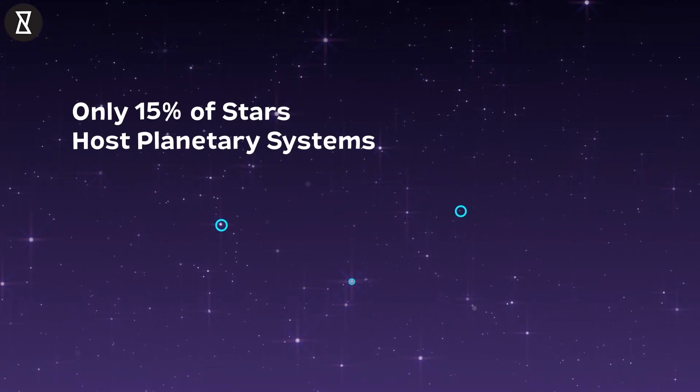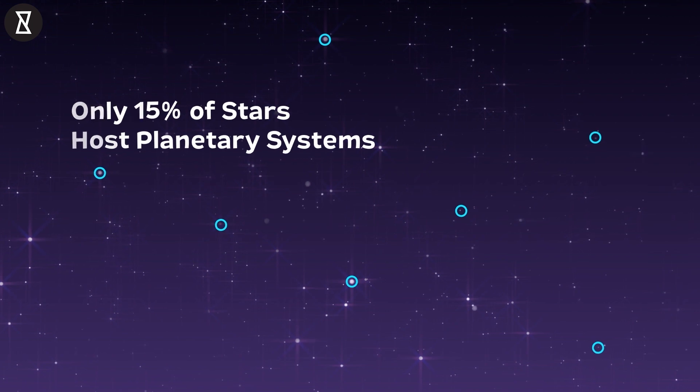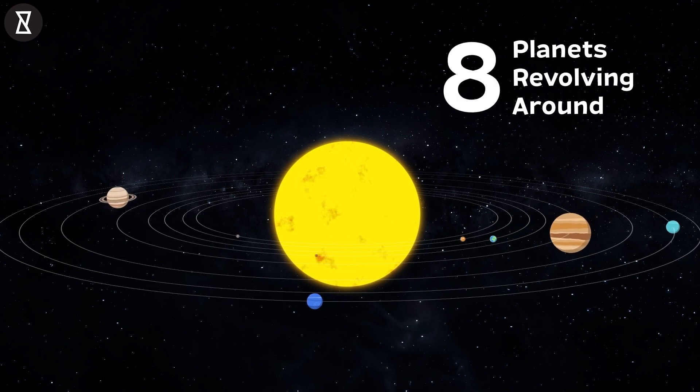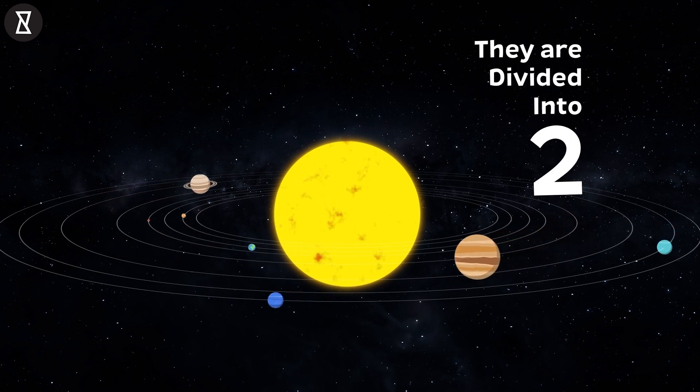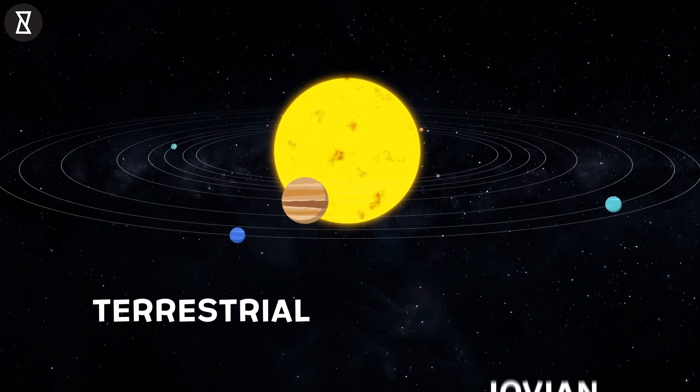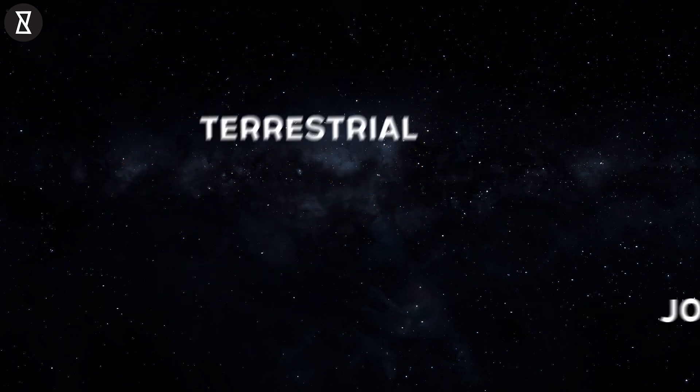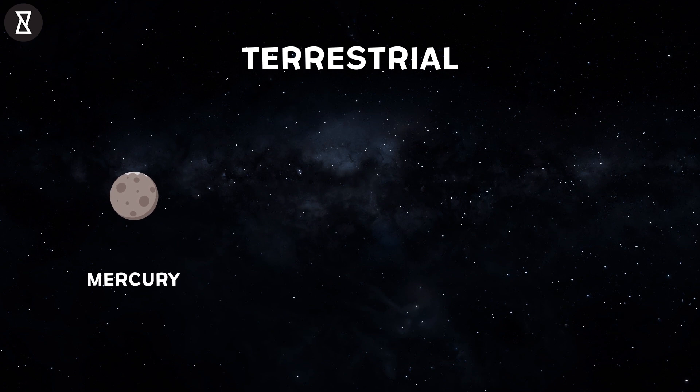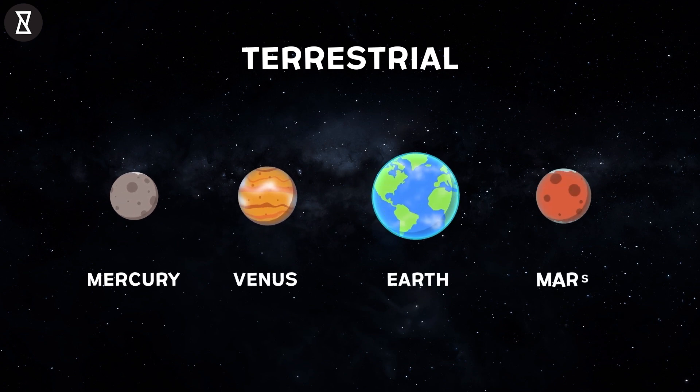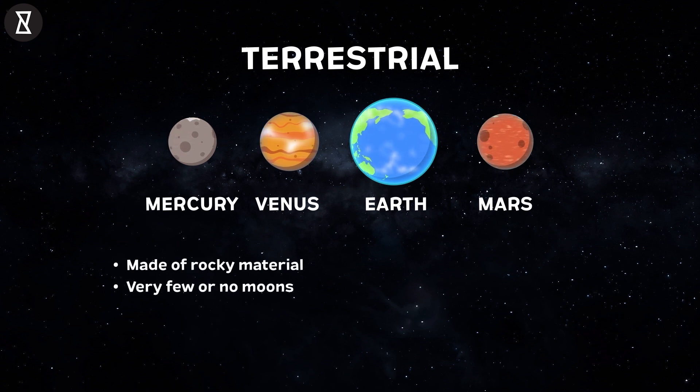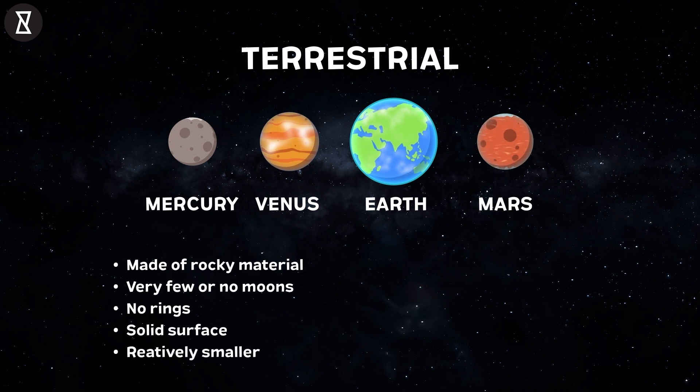Only 15% of stars in the galaxy host planetary systems, and one of those stars is, of course, our own sun. Revolving around the sun are eight planets, and they are divided into two categories: terrestrial planets are Mercury, Earth, Venus, and Mars. As these planets are made of rocky material, they have very few or no moons. They don't have rings, and their surfaces are solid, and they are relatively smaller.